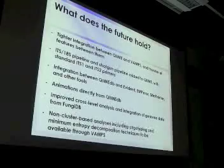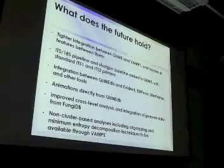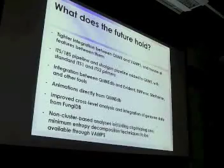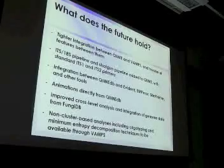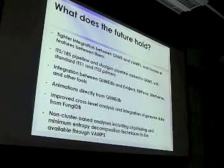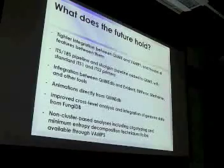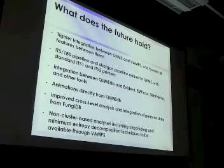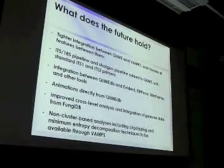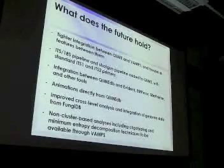We're also doing tighter integration between the QIIME database and other tools like Emperor, SitePainter, and Evident. The ability to do those animations directly from the QIIME database is something we're working on. A lot of you want to do cross-level analysis like relating fungi to bacteria, or taxonomy to expression or shotgun genomics — we can do that outside the database currently, but we don't yet have the infrastructure to do it directly, although that will come in the next couple of years. We're also adding to VAMPS a bunch of sub-cluster-based analyses including oligotyping and minimum entropy decomposition — some of those are available in VAMPS now, and some will become available in the near future.